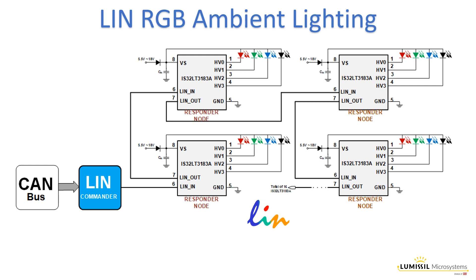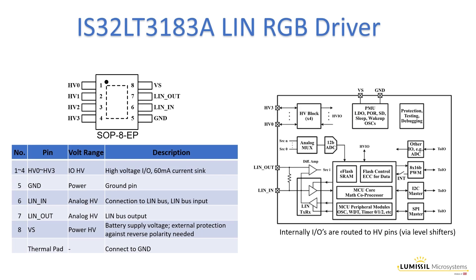LIN LEDs can be used in conjunction with other sensors to enhance safety, for example by flashing ambient lights when driving off lane. The IS32LT3183A comes in a small 8-pin thermally enhanced SOIC package.